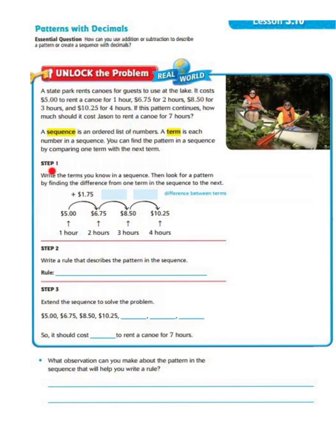Step one says to write the terms you know in a sequence, then look for a pattern by finding the difference from one term in the sequence to the next. Looking back at our word problem, we see that it costs $5 to rent a canoe for one hour, $6.75 for two hours, $8.50 for three hours, and $10.25 for four hours.